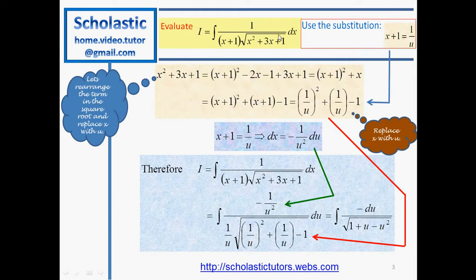We are going to use the substitution x plus 1 equal to 1 over u. We can obviously substitute x plus 1 with 1 over u in the denominator outside the square root. But inside the square root we don't see an x plus 1 term. So we take the expression x squared plus 3x plus 1 and try to rearrange the terms so that we can substitute x plus 1.